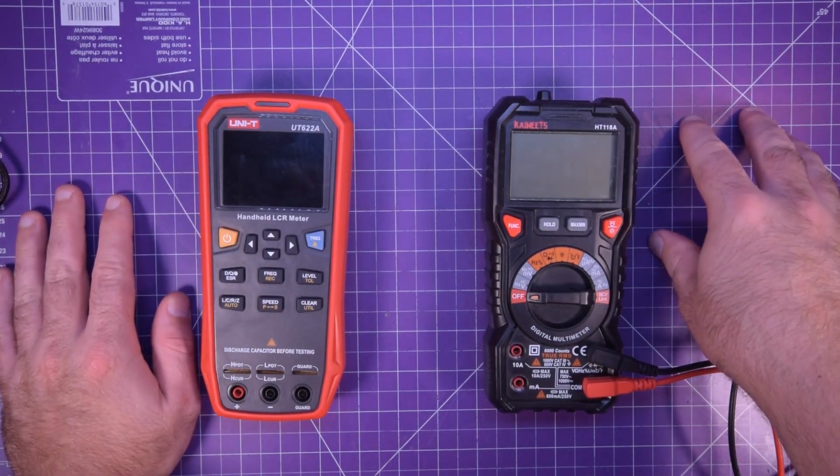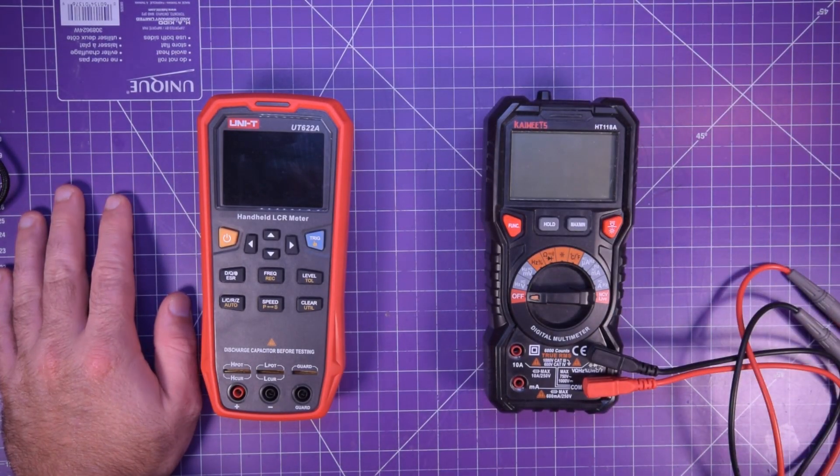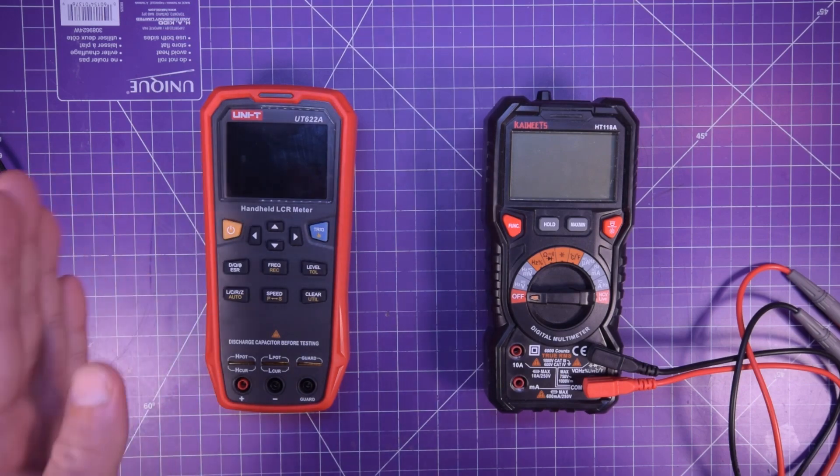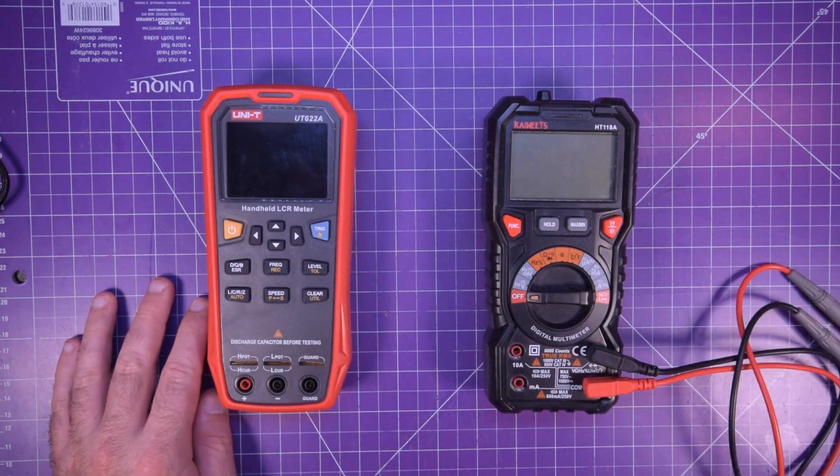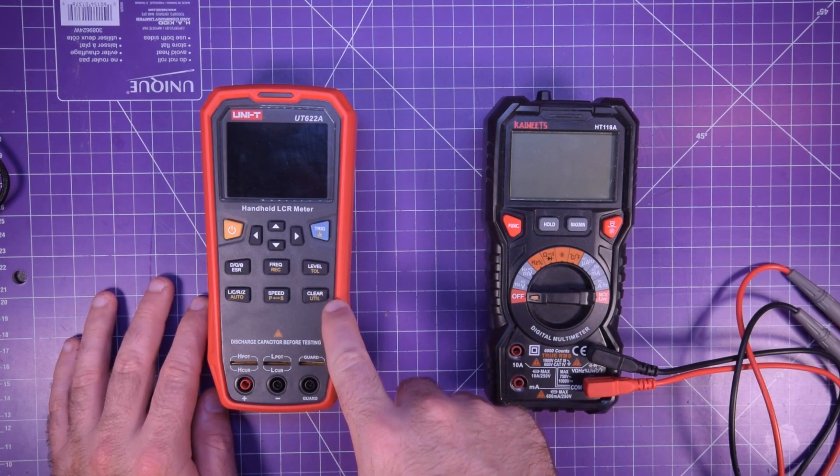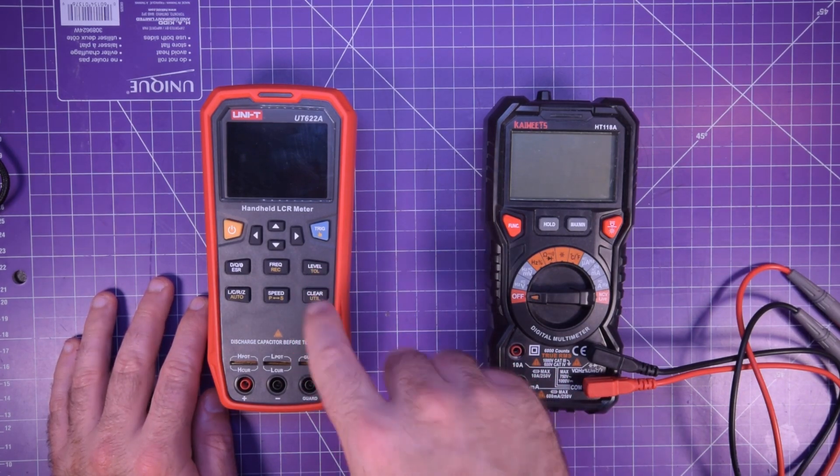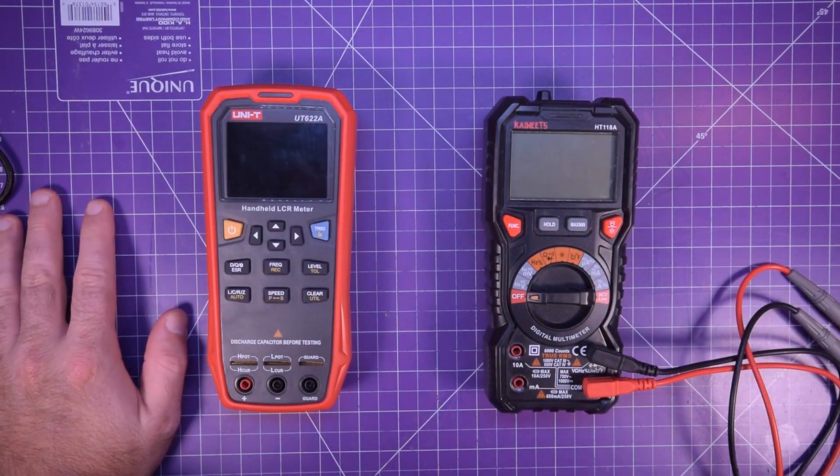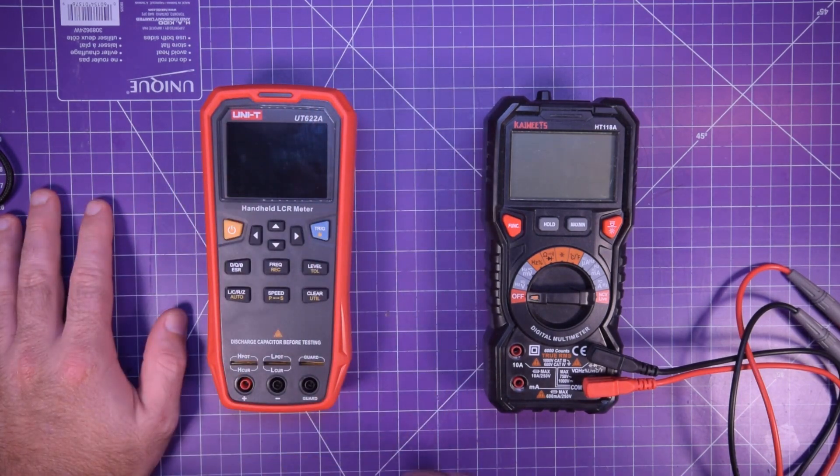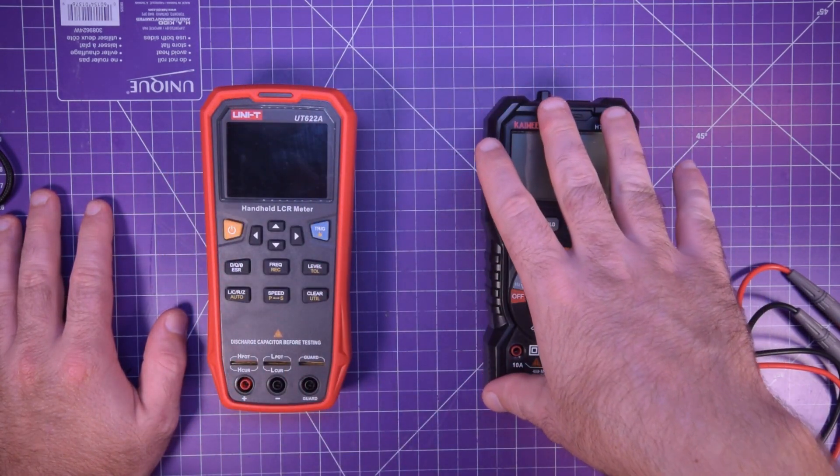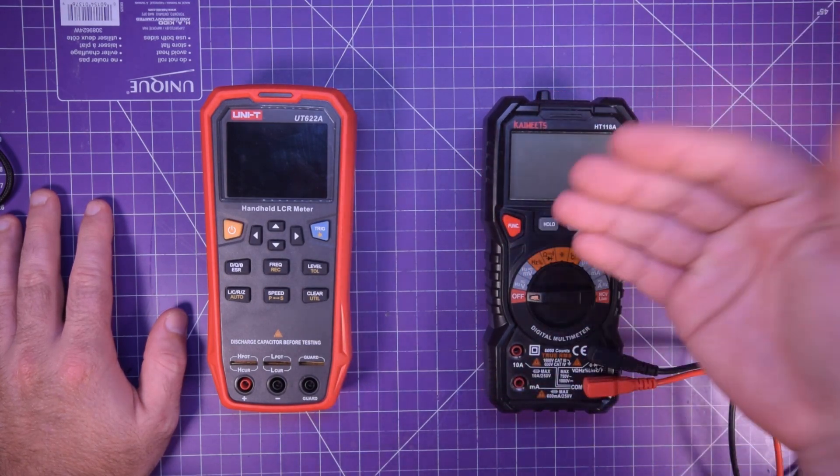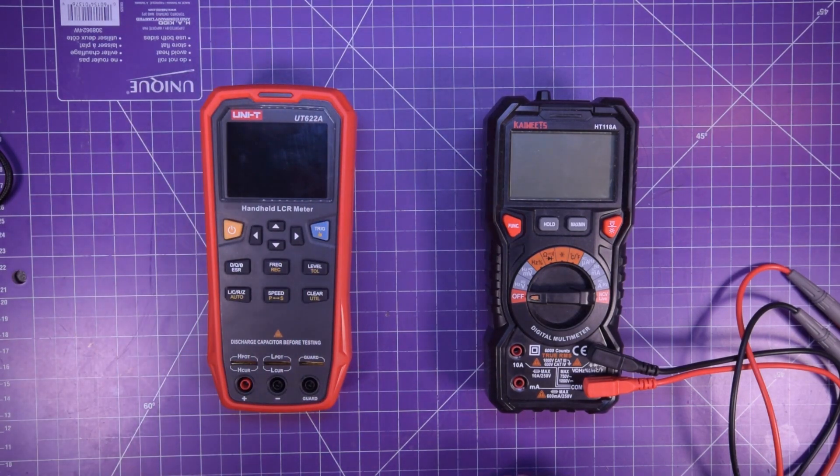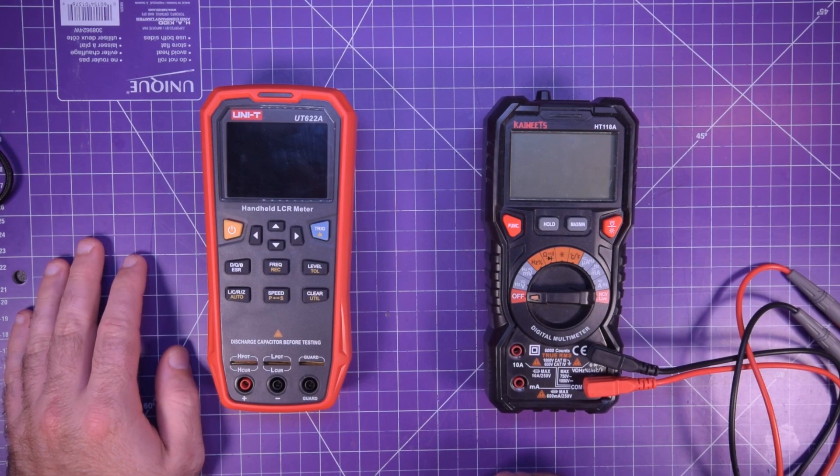Hey everyone, and welcome back. Banggood.com sent me this Unity UT622A LCR meter for review. However, it's a little bit more complex than any other reviews I have ever done. So I figure I have to cover the basics first. In this first look video, I'll explain a little bit what an LCR meter is and how it is different to this Kiwitz meter here, which is just a regular multimeter. On top of that, we're going to take this thing for a spin, do a little bit of testing on it, and see how it acts in normal situations.